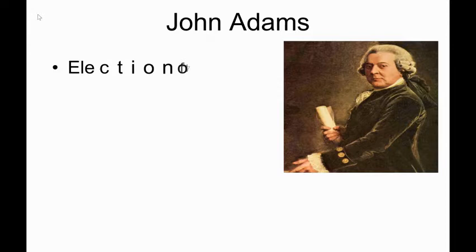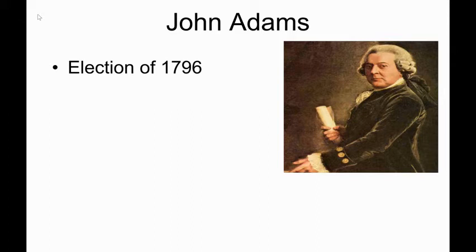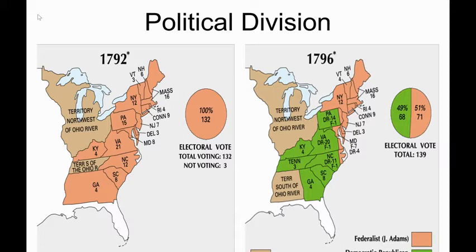Remember that in 1796, George Washington, not wanting to be viewed as a king, retired from public service, and that meant we were going to have a new president come in — that happened to be John Adams. If you take a look at the screen, you can see that this really marks the beginning of political parties and political division.